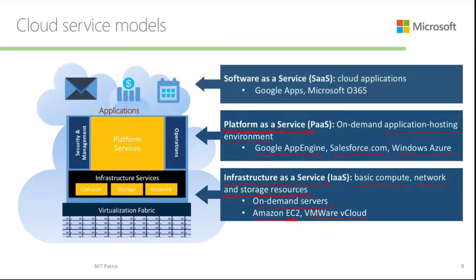Platform as a Service is like purchasing a new laptop without any installed software but with an operating system — you can install new software on it. Then comes Software as a Service (SaaS): cloud applications are available as a service, like Google Apps and Microsoft Office 365 — application software we use as a service.